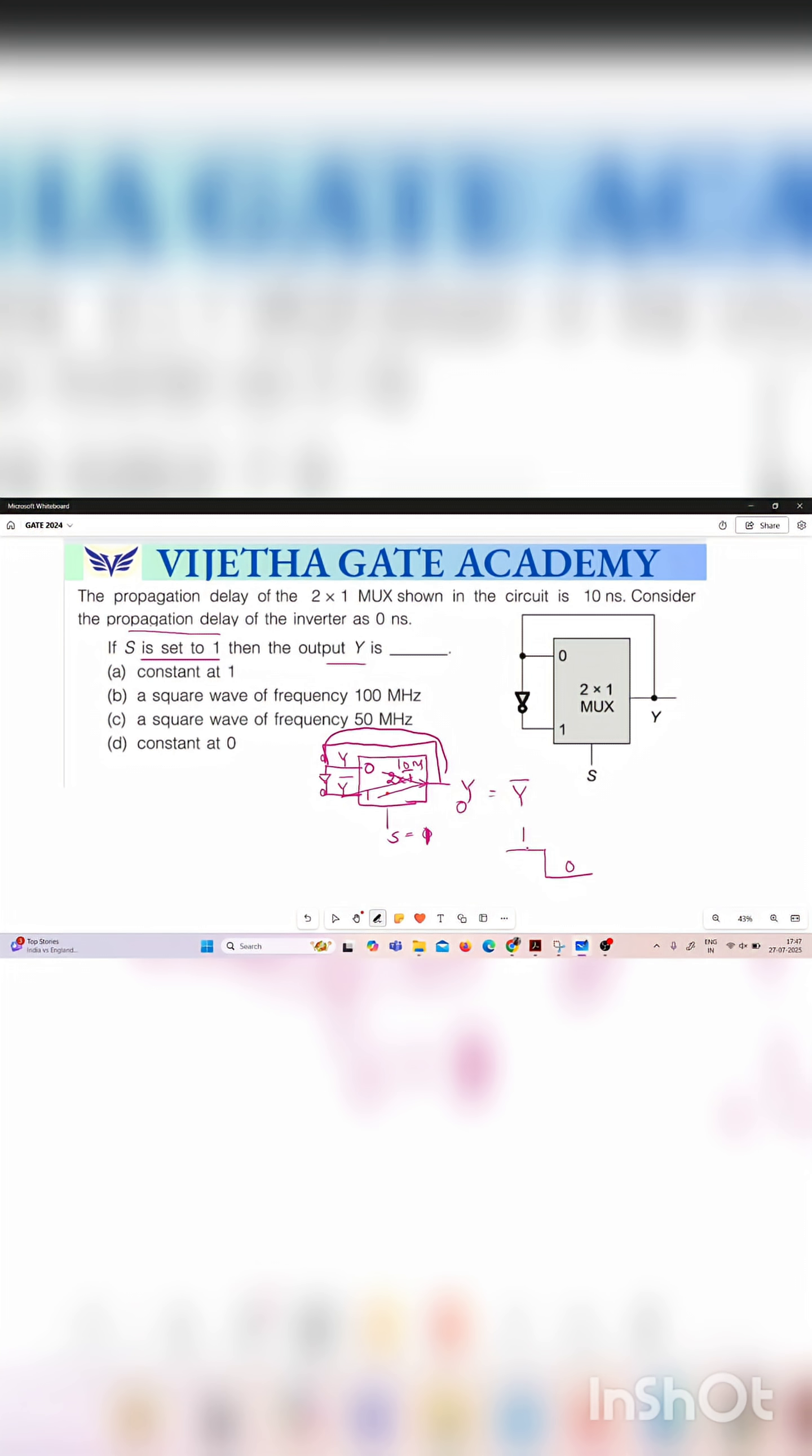So here you are getting some square wave like this. So for getting this 1, for getting the output 1 this mux will take nearly 10 nanoseconds and similarly for getting the 0 it is taking nearly 10 nanoseconds.